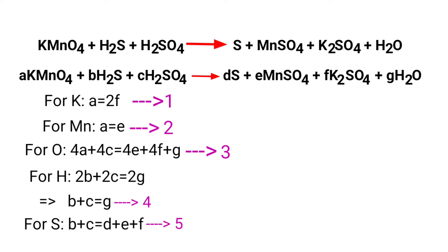Now you can solve the five simultaneous equations. It looks almost impossible, but we know that the coefficients must be integers. Let's set a equals 1. Then from equation 1, 1 equals 2f, so f equals 1/2. From equation 2, e equals 1.